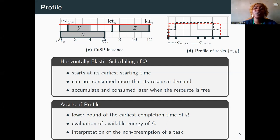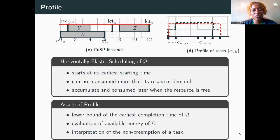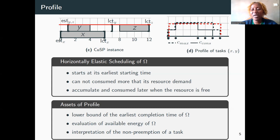Using the profile, we can make a good interpretation of the non-preemption of a task. For example, if task Z starts at its earliest starting time without preemption, the available energy of the set X, Y, and Z is the same as the one of X and Y. As we can observe in Figure D, the available free energy of the profile is not enough to schedule task Z.